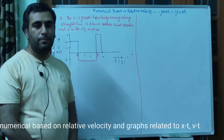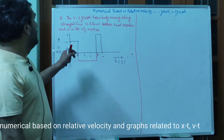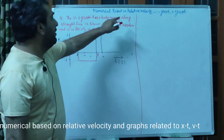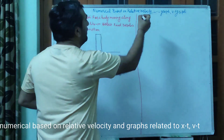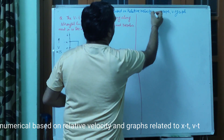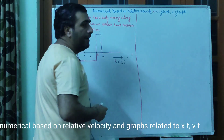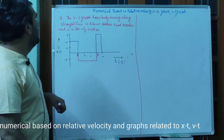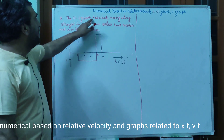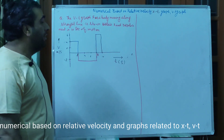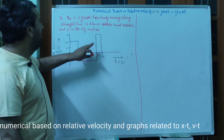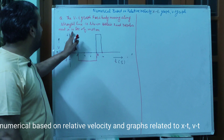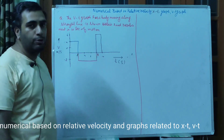Now we will do some numericals which are based on relative velocity, displacement-time graph, and velocity-time graph. The first question is: the velocity-time graph for a body moving along a straight line is shown. Find the displacement in 10 seconds of motion.